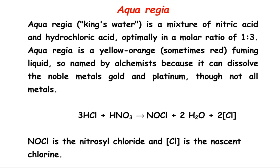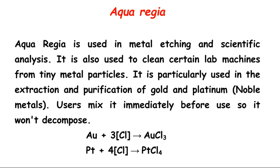Aqua regia contains a mixture of nitric acid and hydrochloric acid in a ratio of 1:3. In the reaction, three molecules of hydrochloric acid react with one molecule of nitric acid to form nitrosyl chloride and nascent chlorine. The nascent chlorine is responsible for dissolving the noble metals.